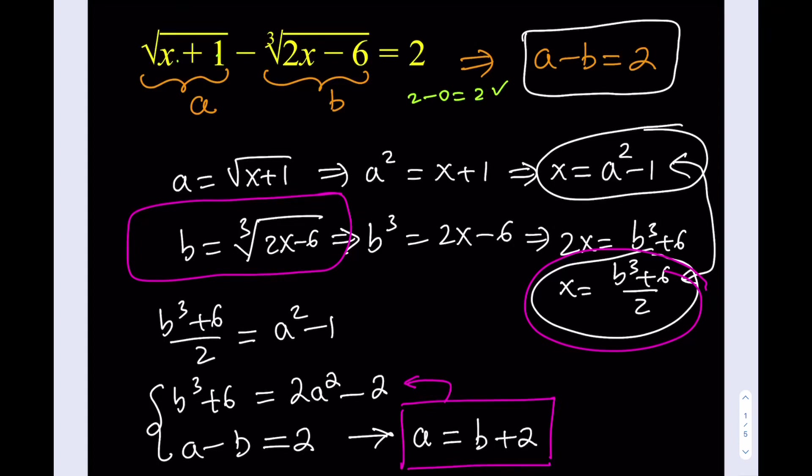What if x equals 35? 35 plus 1 is 36. The square root of 36 is 6. 35 times 2 is 70. 70 minus 6 is 64. The cube root of 64 is 4. 6 minus 4 equals 2. That's right. And if x equals negative 1, this first guy becomes 0. And you plug in negative 1 here, you get negative 8. Negative cube root of negative 8, which is negative 2. Negative negative 2 is equal to 2. That's also true. So, all the solutions work.